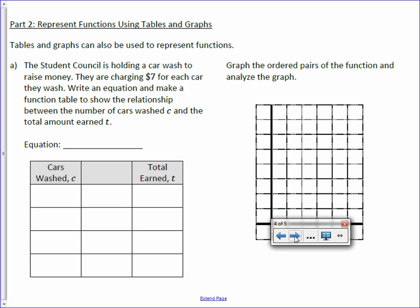So letter A. The student council is holding a car wash to raise money. They are charging $7 for each car they wash. Write an equation and make a function table to show the relationship between the number of cars washed, C, and the total amount earned T. The total equals $7 times the amount of cars washed. And that equation we're just going to put in this center box. They don't give us any amounts to plug in, so we'll start at the left and plug in 0, 1, 2, 3.